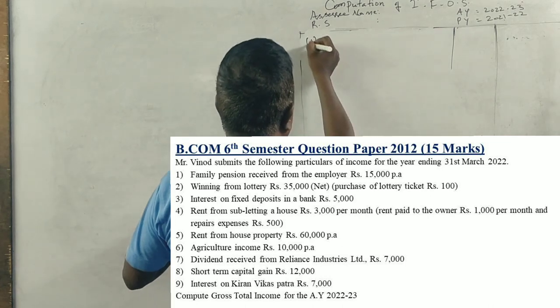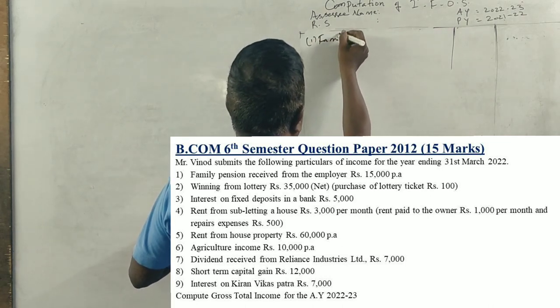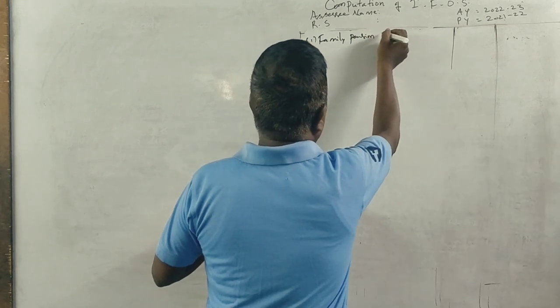Family pension received from an employer Rs. 50,000 per annum. This is the important rule. Family pension is a guarantee adjustment.